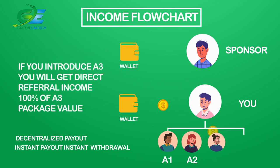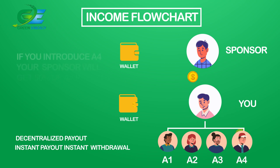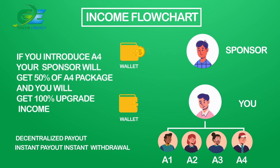If you introduce A3, you will get direct referral income of 100% of the A3 package value. If you introduce A4, your sponsor will get 50% of the A4 package and you will get 100% of A4 upgrade income.